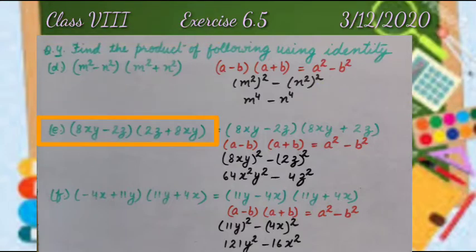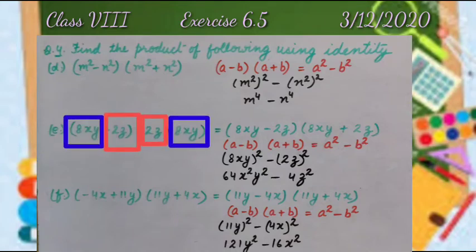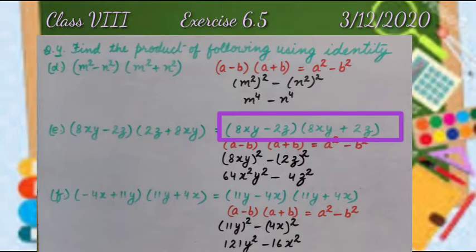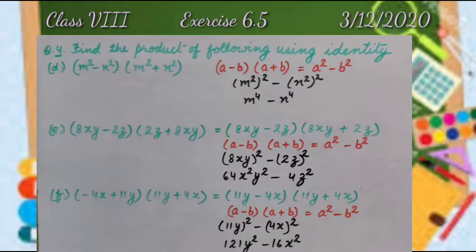Part E: 8xy - 2z multiplied by 2z + 8xy. Here we can see the terms are same, but their places are different in different brackets. So we can use the commutative property for addition. Hence we can write 8xy - 2z multiplied by 8xy + 2z. And now we can use the identity (a - b)(a + b) = a² - b².